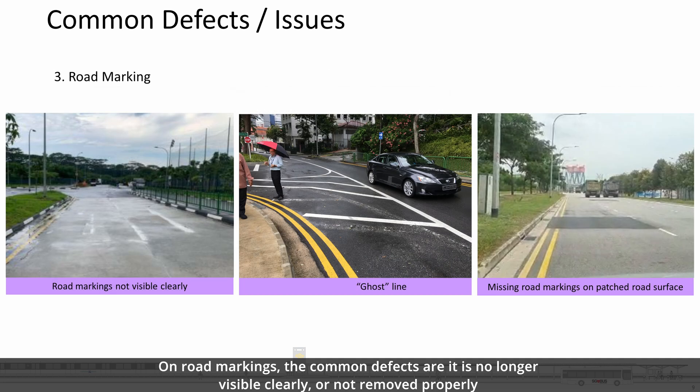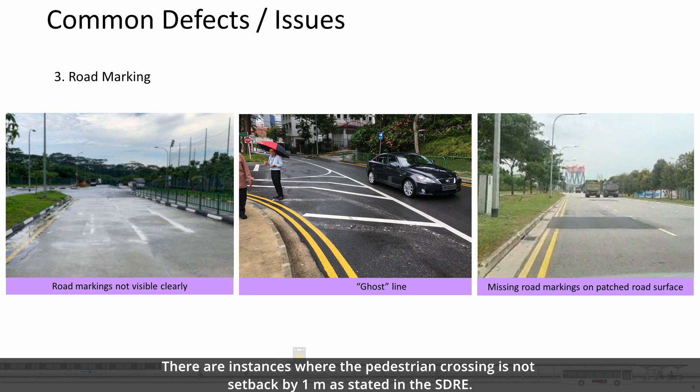On road markings, the common defects are that markings are no longer clearly visible, or not removed properly, resulting in ghost lines, or are missing after patched road pavement surface. There are also instances where the pedestrian crossings are not set back by one metre, as stated in the SDRE.